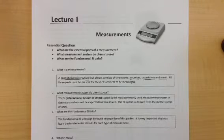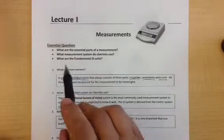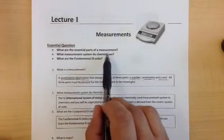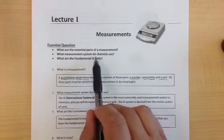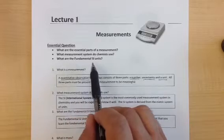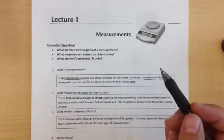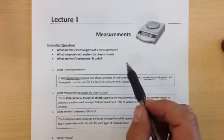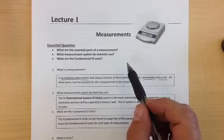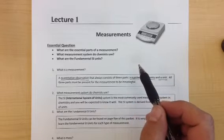Let's get started with Lecture 1, Measurements. This is the first lecture in our introductory unit, Tools of the Trade. The essential questions that need to be addressed in this lecture are: what are the essential parts of a measurement, what measurement system do chemists use, and what are the fundamental SI units. These three questions you need to be able to answer by the time we're done with this lecture.